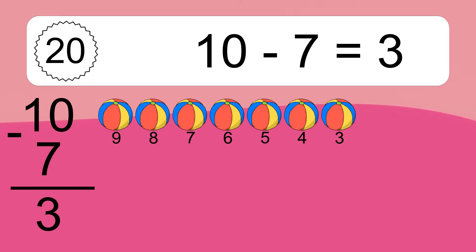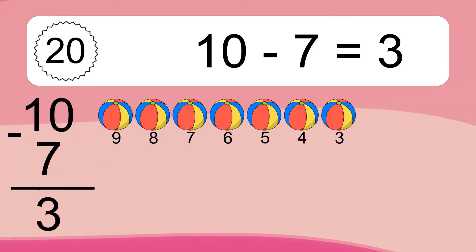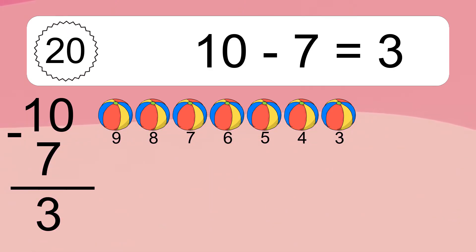10 minus 7 equals what? Let's count it: 9, 8, 7, 6, 5, 4, 3.